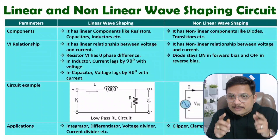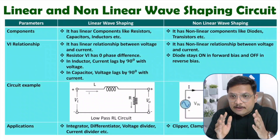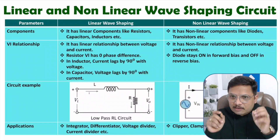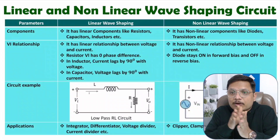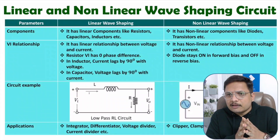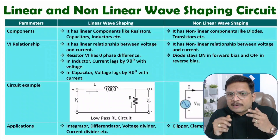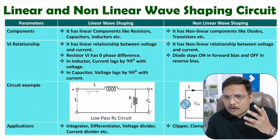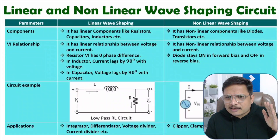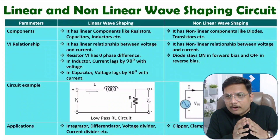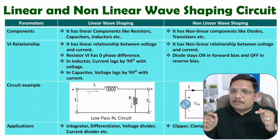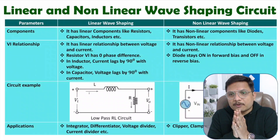If you want to change frequency, use a cycloconverter. So based on application we select circuits. To summarize: in non-linear wave shaping, non-linear devices made of semiconductor materials — like diodes, transistors, and MOSFETs — are used, while in linear wave shaping only linear components like resistors, inductors, and capacitors are used. I hope you now understand the difference. If you have any questions, please note them in the comment section. Thank you for watching!